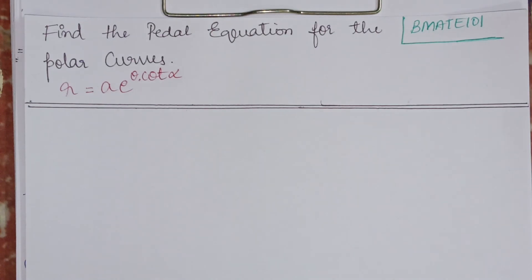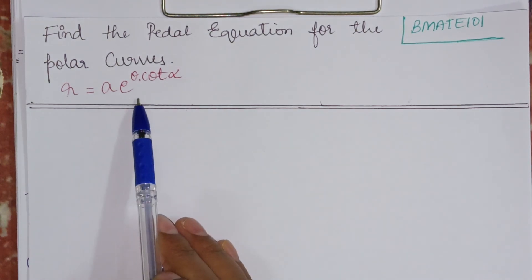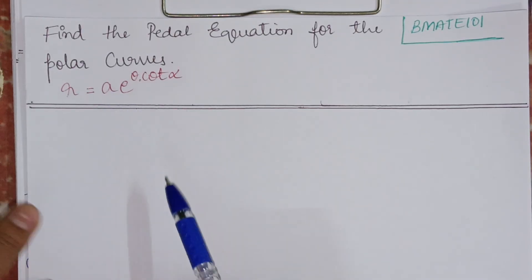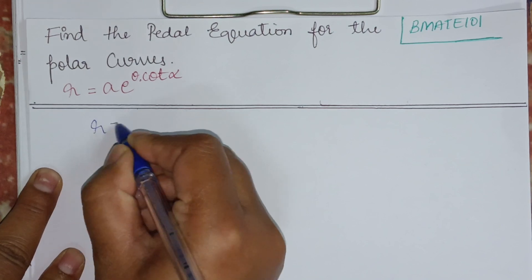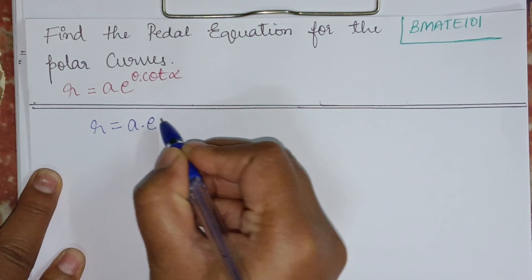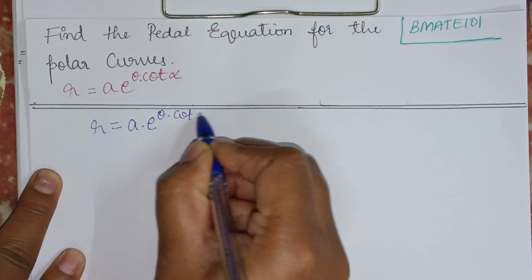Hello everyone, welcome back to my YouTube channel, Learn with Sumi. In this video, we are going to find the pedal equation for the polar curves. The polar curve given is R equals A into E to the power theta into cot alpha.